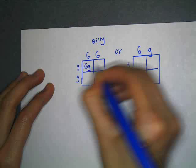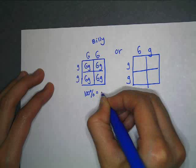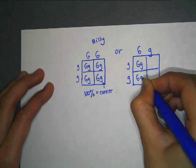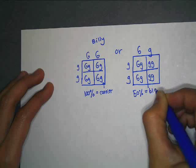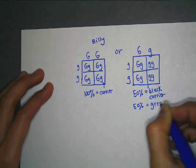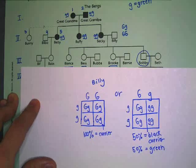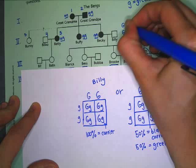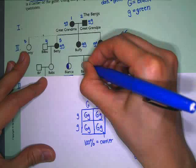For time's sake I'm going to start doing it. If Billy is big G, big G crossed with Becky little g, little g, there's 100% probability of having kids that are carriers for the green gene. In the other square, if Billy is big G, little g, there's a 50% chance kids will have black hair and be carriers, and 50% chance they'll have green hair. Based on what you see — all children have black hair — Billy should be big G, big G. So we cross out the other option. That means all his daughters and all his kids are going to be carriers.